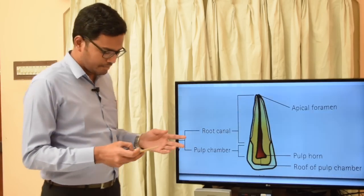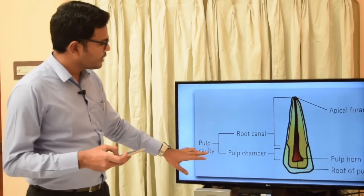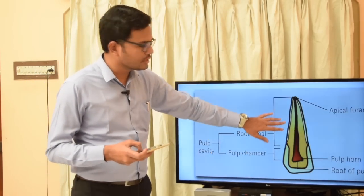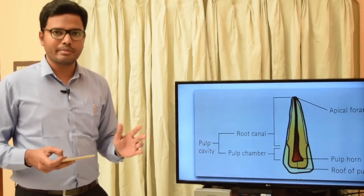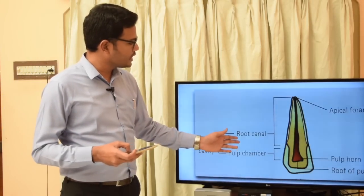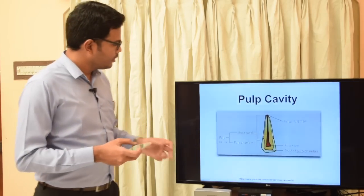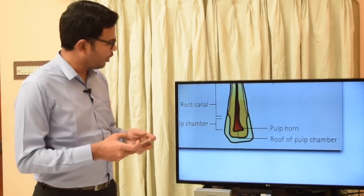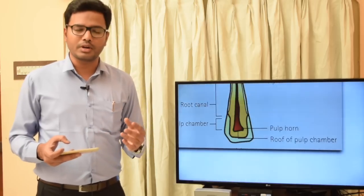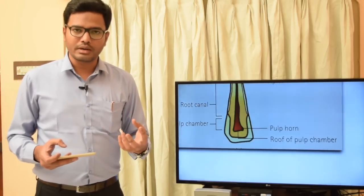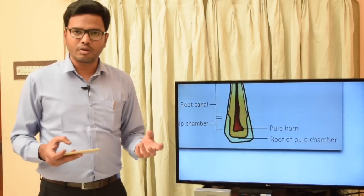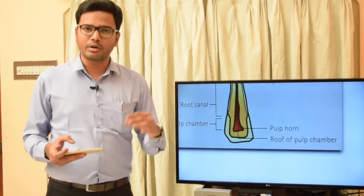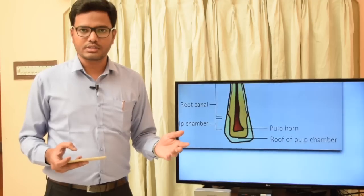Within the pulp cavity, you have different parts. The part of pulp present within the crown is called the pulp chamber, and the part present within the root is the root canal. So pulp cavity is broadly categorized into pulp chamber and root canal. You can also see the pulp horn, which is the extension of pulp beneath a cusp or prominence, seen in the coronal aspect. Each pulp chamber is enclosed by a roof, a floor, and corresponding walls.